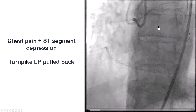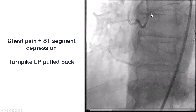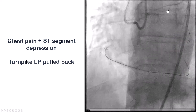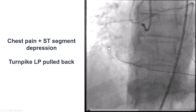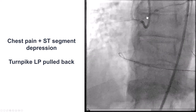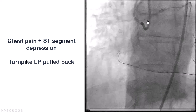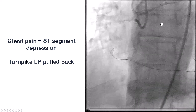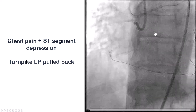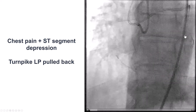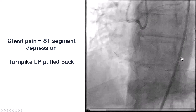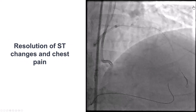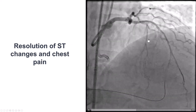At this point, the patient started developing chest pain and the ST segments became depressed on the monitor. We didn't know exactly what was going on — there was no pressure dampening on either guide catheter, but we did have diffuse disease in the LAD. Our assumption was that this was due to ischemia from having the microcatheter through the LAD, so we withdrew the Turnpike LP all the way back, and after that the patient stabilized.